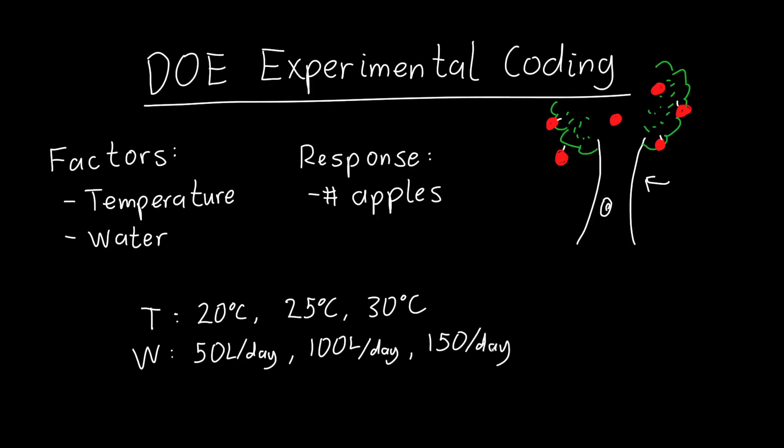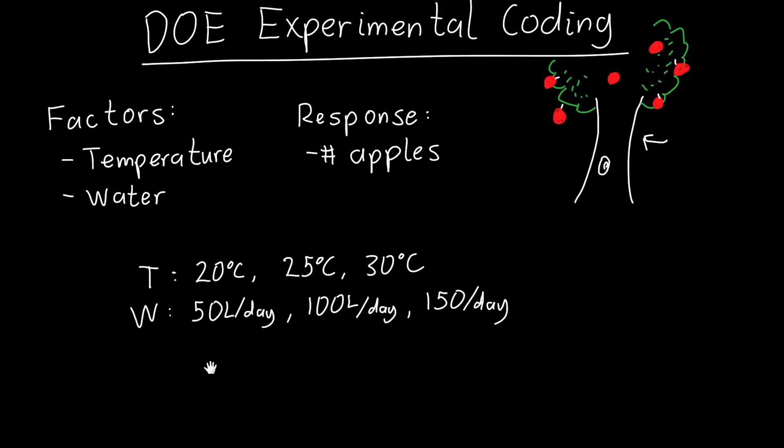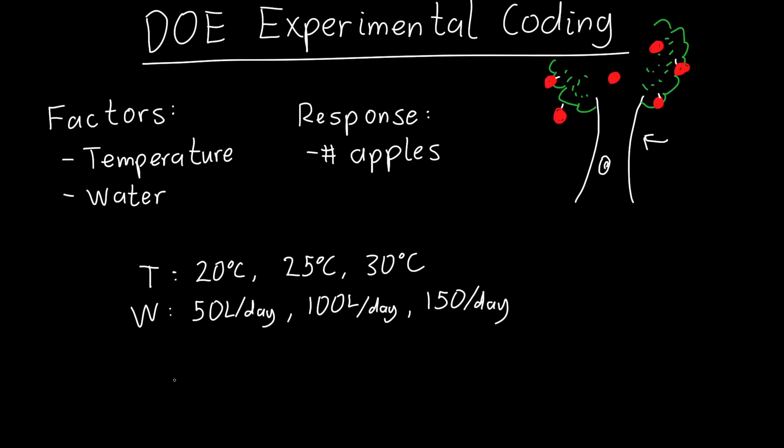And so let's say that I actually carry out this experiment, and I want to fit a model to the data. So I want to try and make sense of the data. I might try fitting a linear model, which is a very reasonable and standard model, which says our response, which is the number of apples, is equal to some offset or some intercept, which I'll call y₀, plus some coefficient, I'll call it β₁, multiplied by my temperature, plus some other coefficient, β₂, multiplied by my water. And maybe I want to figure out how these two variables interact with each other. So I've got also a β₁₂ term times my temperature times my water.